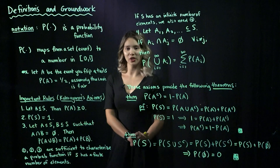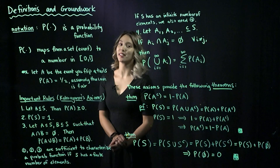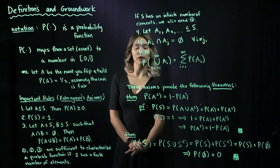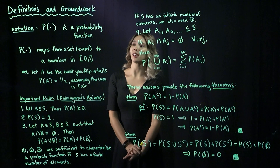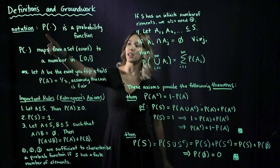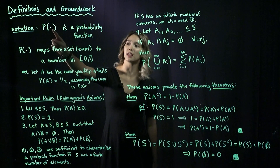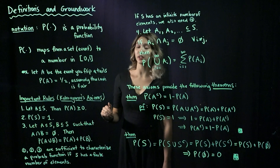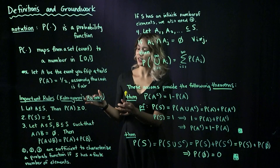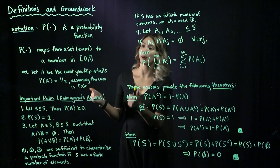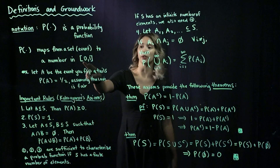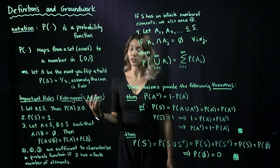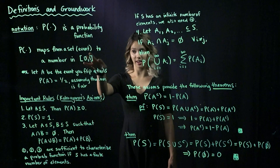In this video we're going to build off our knowledge of sets, events, and sample spaces and move on to probability. The first thing we need to do is assign some notation. We're going to have capital P with parentheses — a probability function — which takes an event and maps it to a number in the interval [0, 1], including those two endpoints. So it assigns a probability to an event.